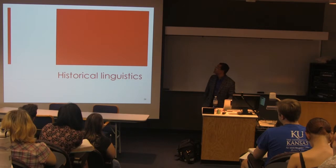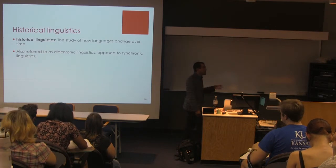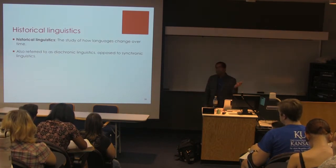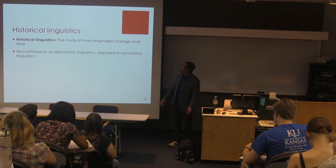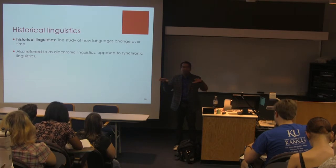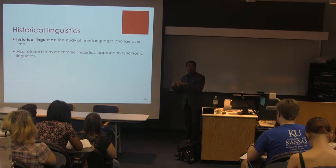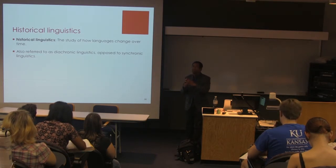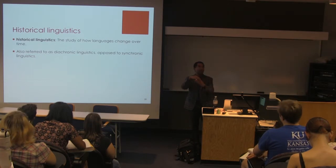We're going to look at historical linguistics — basically the study of how languages change over time. Sometimes you'll hear this referred to as diachronic linguistics: languages throughout time. Whereas for the most part what we've been looking at in this class has been language from one particular point in time, which we call synchronic linguistics. That point in time could be in the past, but for the most part we've been looking at language as it currently is. These are just different ways of viewing language as it progresses over time versus looking at it at one point on the timeline.